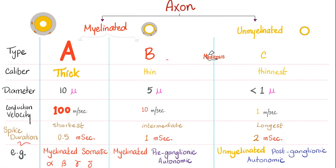The spike duration — the action potential's upward depolarization and downward repolarization — is fastest for type A at 0.5 milliseconds, versus type B at 1 ms and type C at 2 ms.